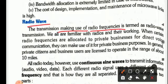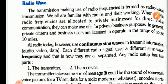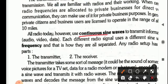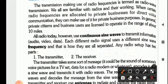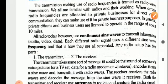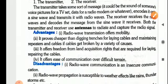Same way as microwave, we have radio waves, but here the transmission makes use of radio frequency. When you tune a radio, you set the frequency that catches and receives the signal. All radios today use continuous sine waves to transmit information — that is, audio, video, data, etc. Each different radio signal uses a different sine wave frequency, and that is how they are all separated. A radio setup has two parts: a transmitter and a receiver.